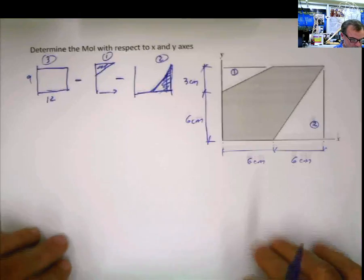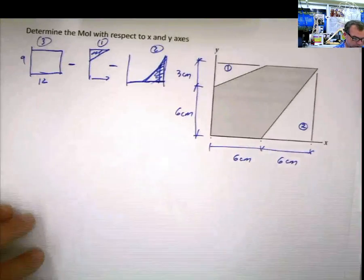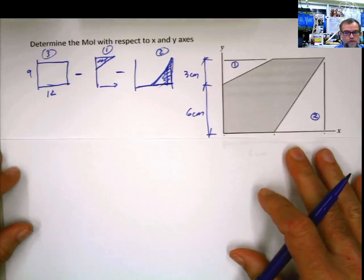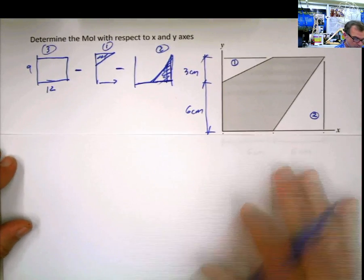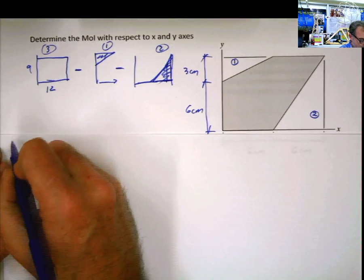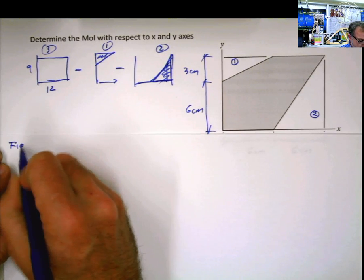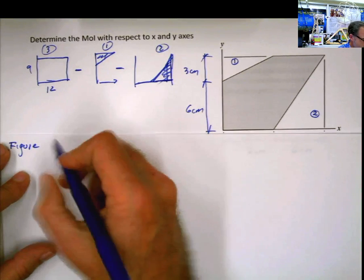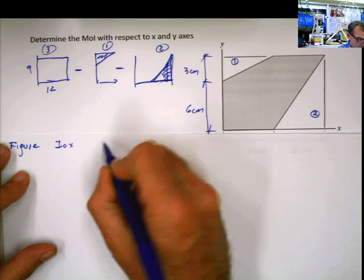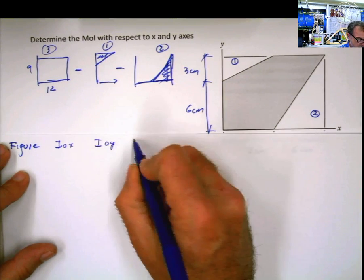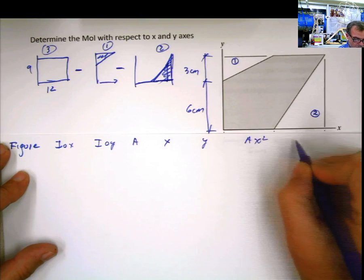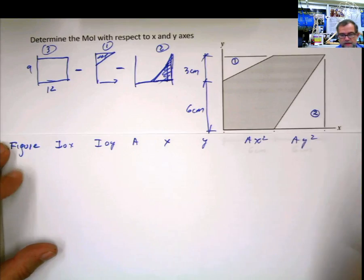So let's start doing that problem in that way. I'm going to give you some tips and pointers of what to do. Figure, i sub 0 x, i sub 0 y, a, x, y, a times x squared, a times y squared.